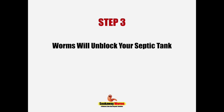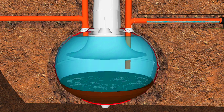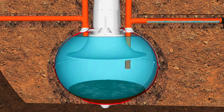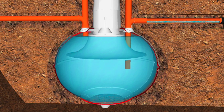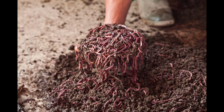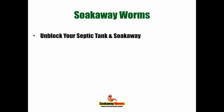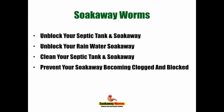Step three: soak away worms will also unblock and clean your septic tank. As we've seen, sludge is the main reason why septic tanks and soak aways develop problems. The worms will not only remove the sludge from the septic tank, they'll also keep it clean — reducing your septic tank emptying times to virtually once every 10, 15, or 20 years instead of one, two, or three times a year. Soak away worms unblock septic tanks, soak aways, and rainwater soak aways. They'll prevent your soak away from becoming clogged again and save you thousands of pounds in repair costs.